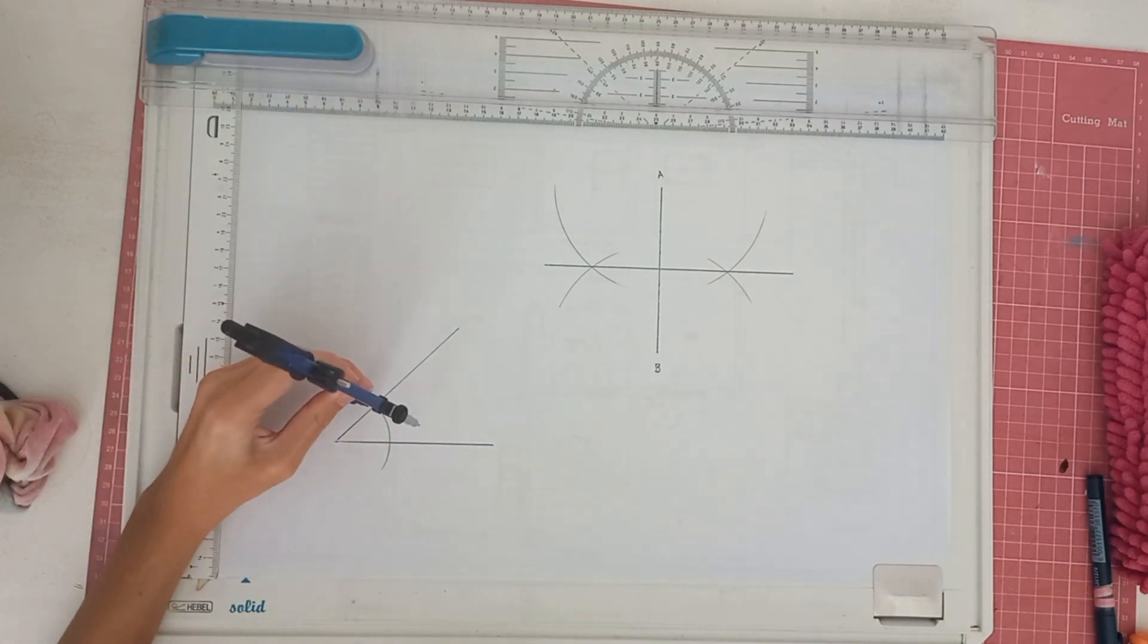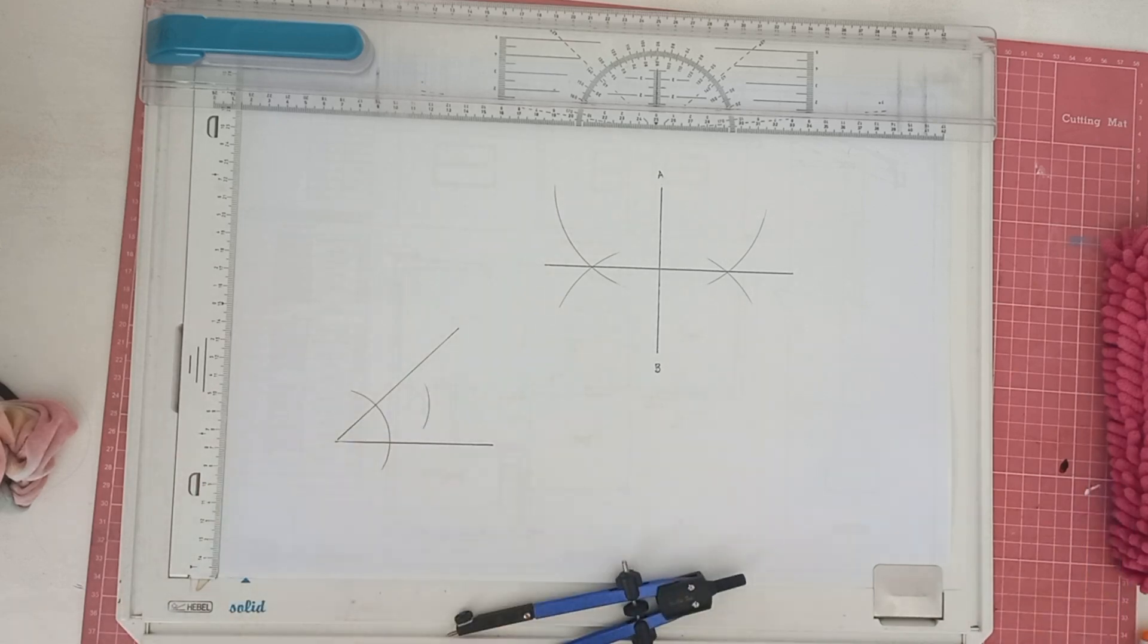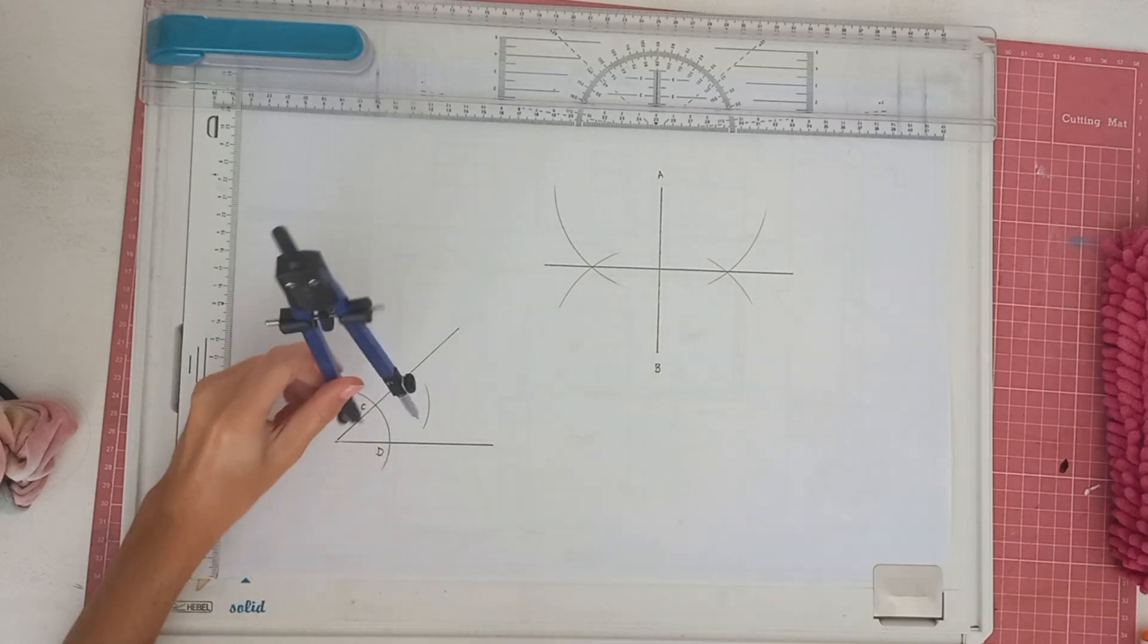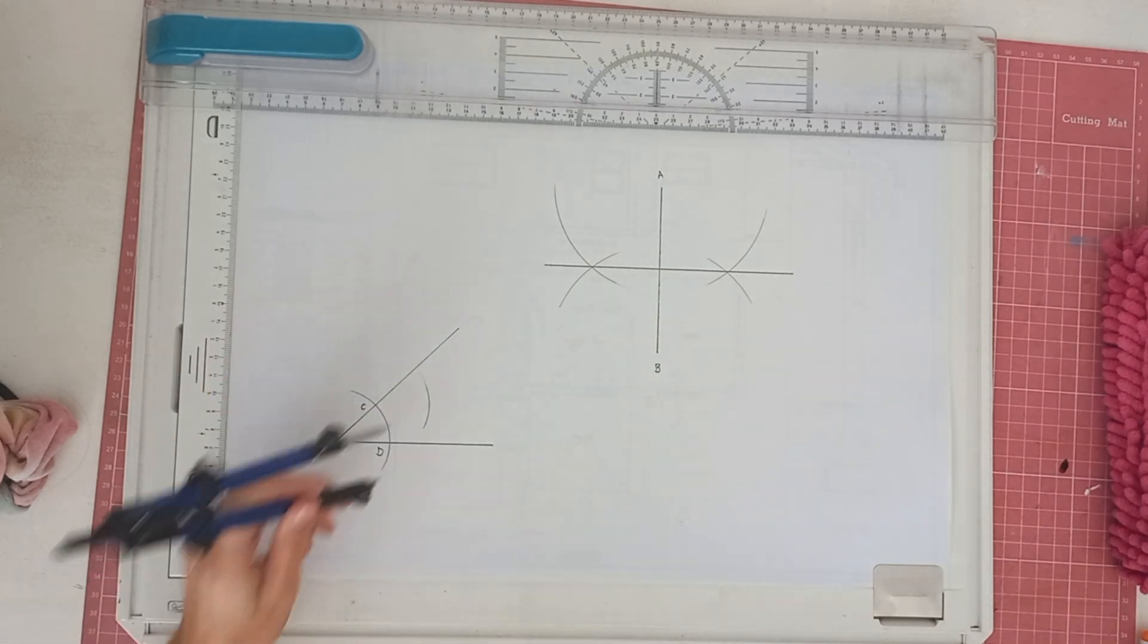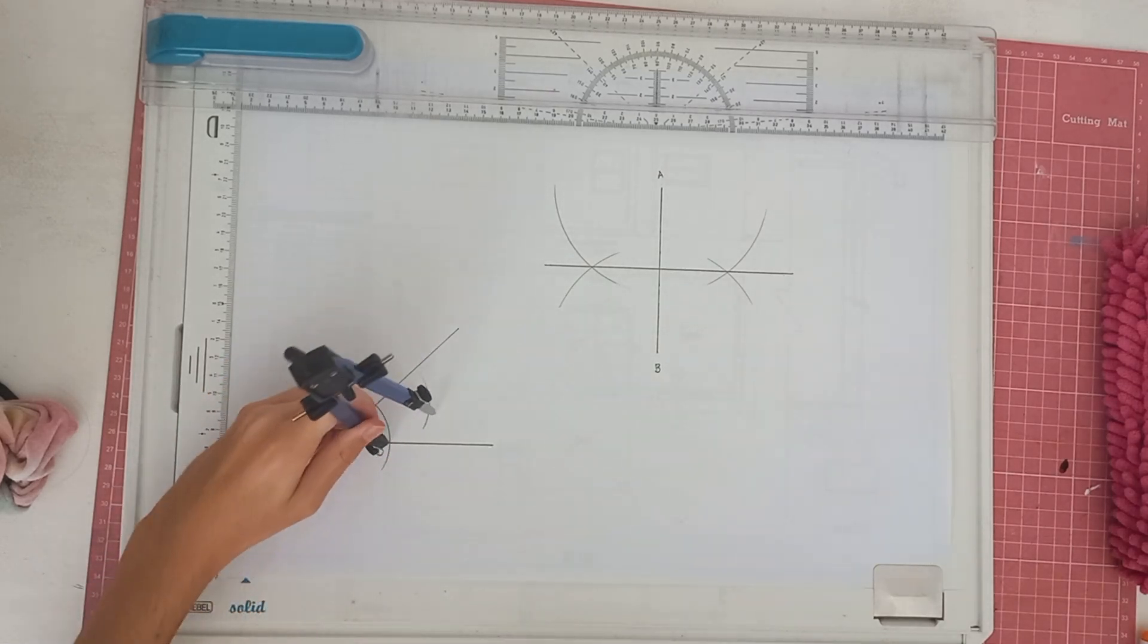From the circle you're going to make an arc. We're going to actually label these points again so we've got point C and point D. We are going to go from point C and make an arc as I've done already and then from D we are going to make an arc again.